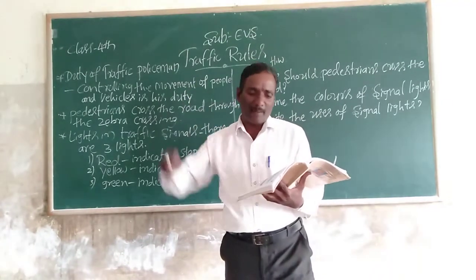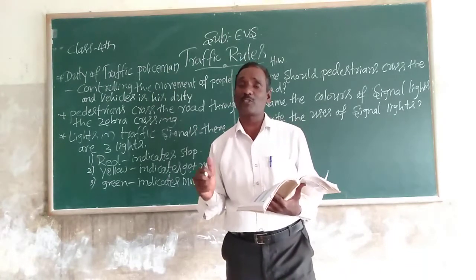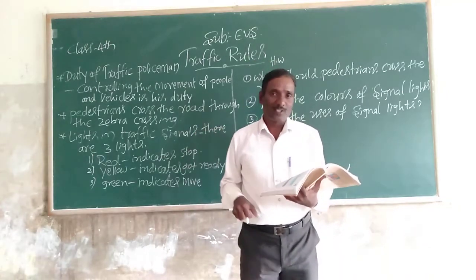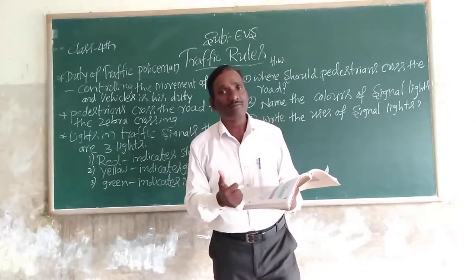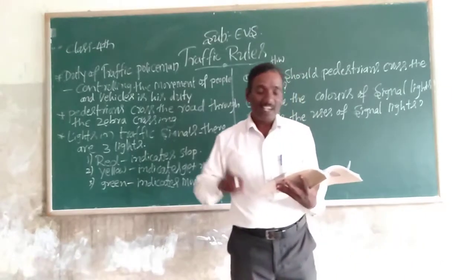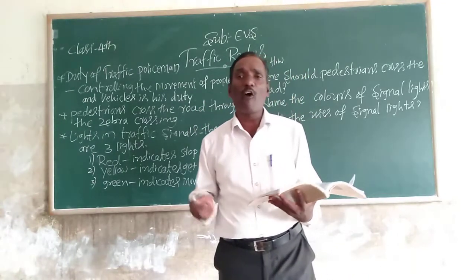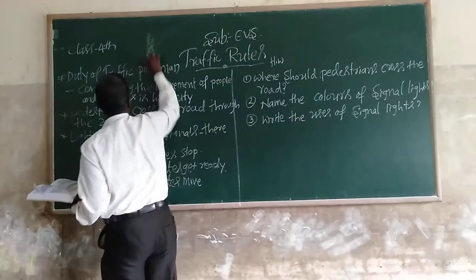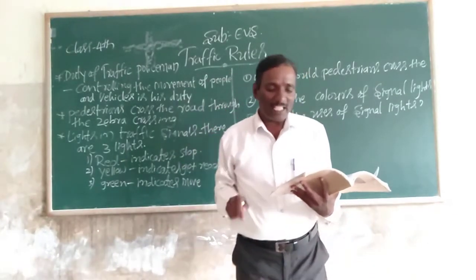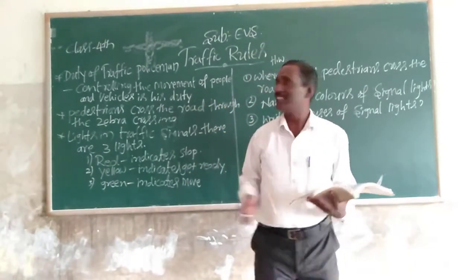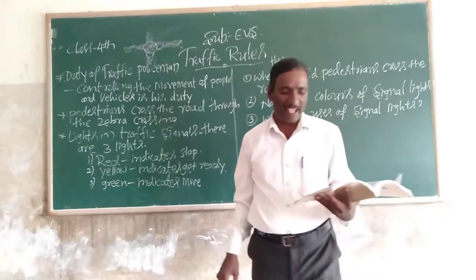The students ask the teacher: Sir, who is standing in the middle of the road? The teacher said: He is a traffic policeman. It is a place where four roads meet — it is a circle. He is standing there controlling the movement of people and vehicles. That is his duty.